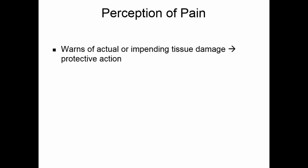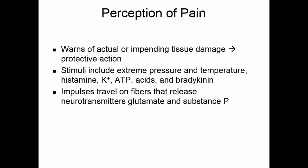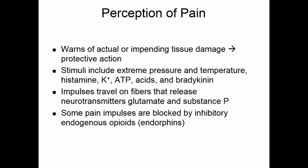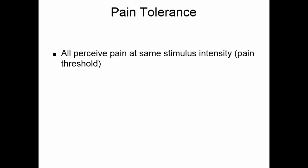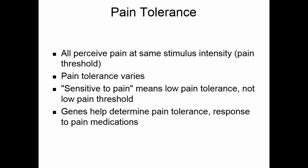Pain warns of actual or impending tissue damage, allowing you to take protective action. Several things can stimulate pain receptors: extreme pressure and temperature, the release of histamine or bradykinin from damaged tissues, the release of potassium or ATP indicating cell rupture, and acids that could be byproducts of metabolism. Impulses travel on fibers that release the neurotransmitters glutamate and substance P — these are most involved in mediating pain. Some pain impulses may be blocked naturally by endogenous opioids, the endorphins. All people perceive pain at the same stimulus intensity — that's your pain threshold — but pain tolerance varies individually. If someone is sensitive to pain, it means they have a low pain tolerance, not a low pain threshold. Your pain tolerance is somewhat determined by your genetic makeup, as is your response to pain medications.